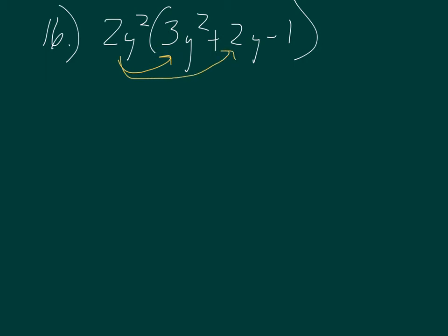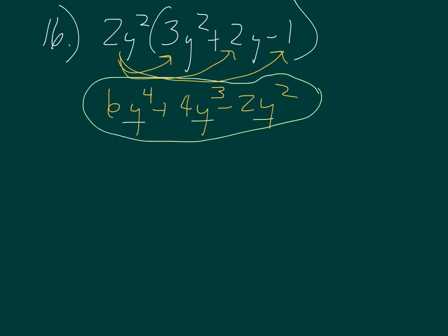Multiplying polynomials. Here's number 16. 2y squared times 3y squared plus 2y minus 1. You're just distributing the 2y to each piece and then seeing if I can combine like terms. So I've got 6y to the 4th plus 4y to the 3rd minus 2y squared. I look and see, I've got a y to the 4th, a y to the 3rd and a y squared. Nothing to combine, so that is my final answer.